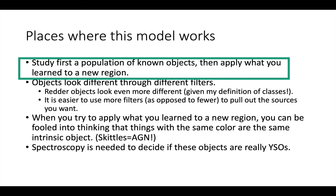An important lesson is that when you apply what you've learned to a new region, you can be fooled — things with the same color may or may not be the same intrinsic object. Remember the skittles representing AGN: you do need spectroscopy to decide if objects are really young stars. The model makes spectroscopy easy, but it's harder in real life.